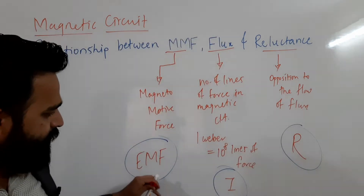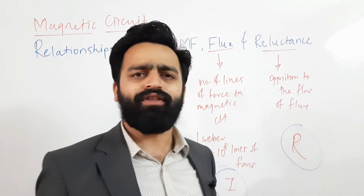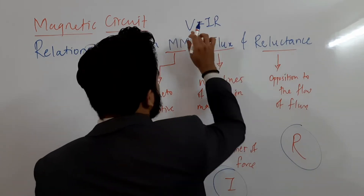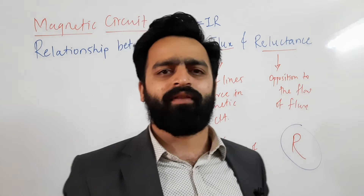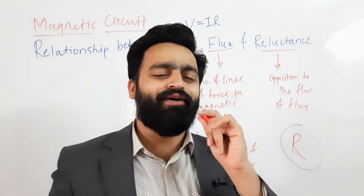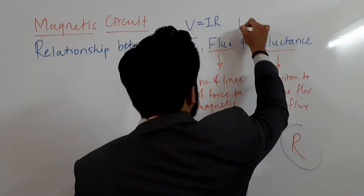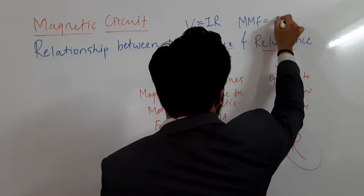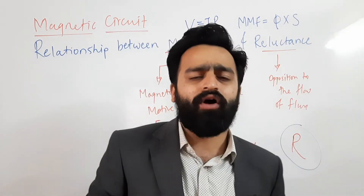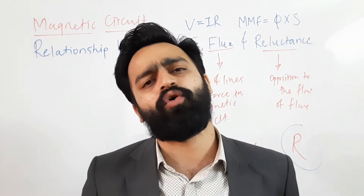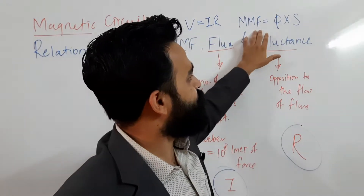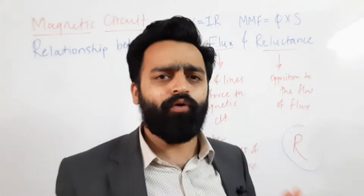If you know the relationship between EMF, current, and resistance — Ohm's Law — by Ohm's Law we write V = IR, i.e., EMF equals current into resistance. Hence, if we want to derive the relationship between MMF, flux, and reluctance, it is going to be: MMF = flux × reluctance. Reluctance is denoted by capital S. For the electric circuit V = IR; similarly, for the magnetic circuit MMF = flux × reluctance — as simple as that.